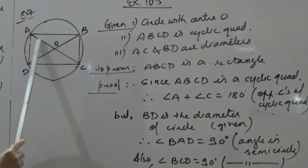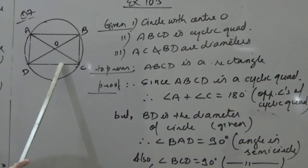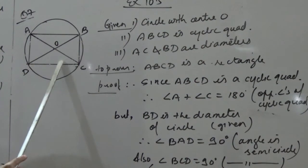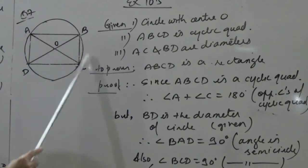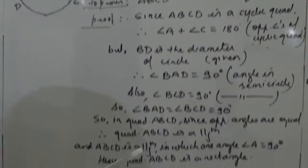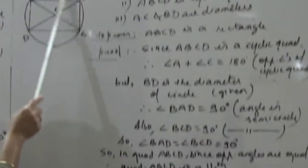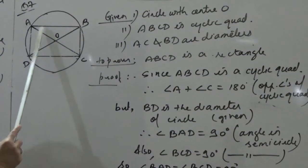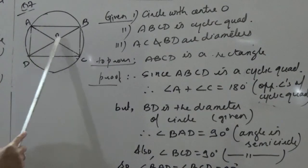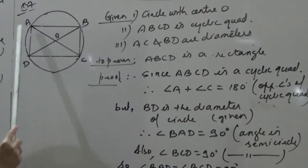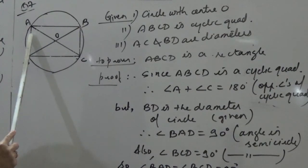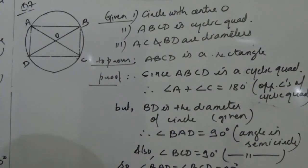We have proved angle BAD and angle BCD both equal 90 degrees. Since the opposite angles are equal, ABCD is a parallelogram. And since ABCD is a parallelogram in which one angle is 90 degrees, hence ABCD is a rectangle.